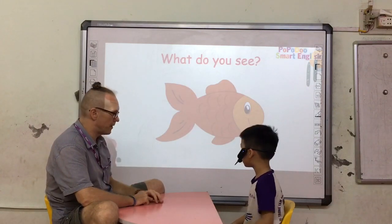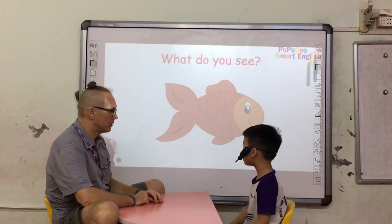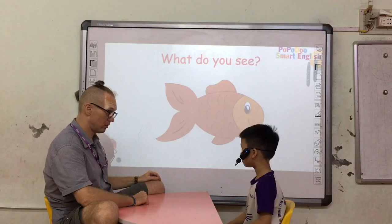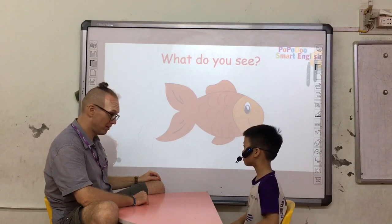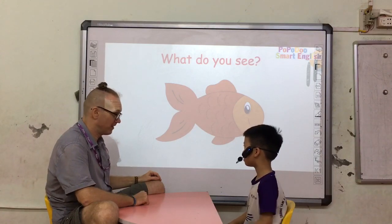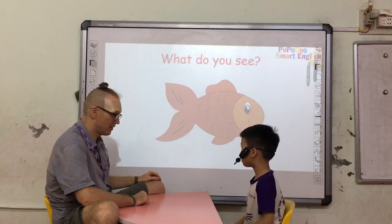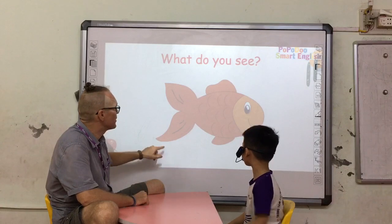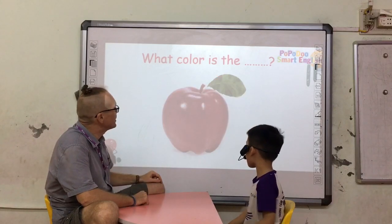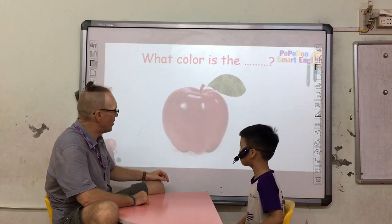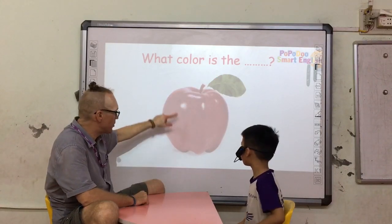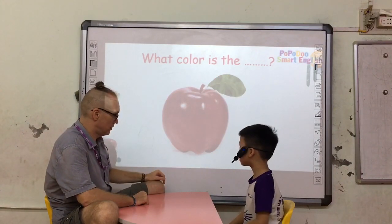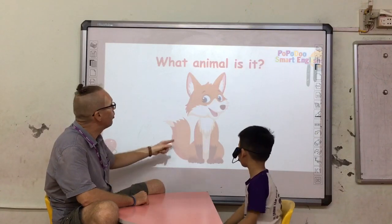Okay, well done. What do you see? I see a sheep. Sheep or fish? Sheep. Fish. I see a fish. Apple. What color is the apple? It's red.